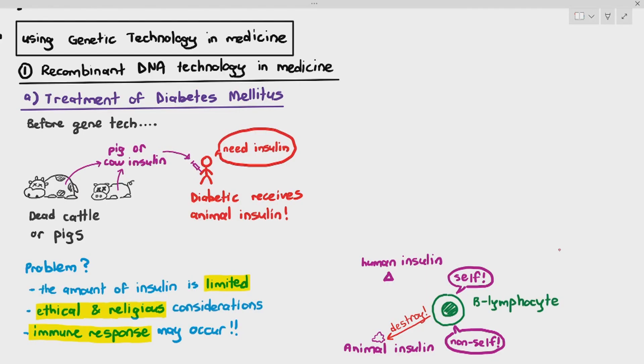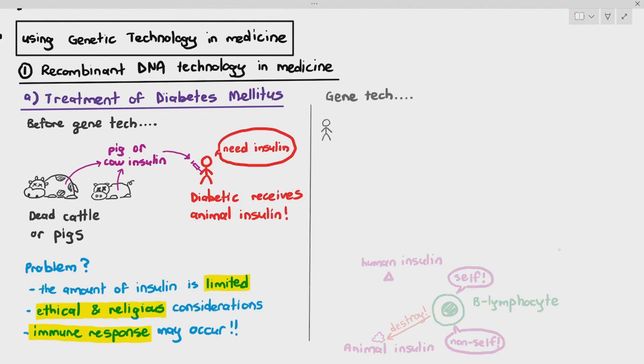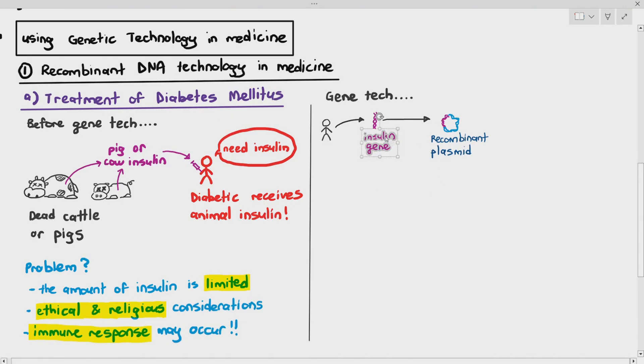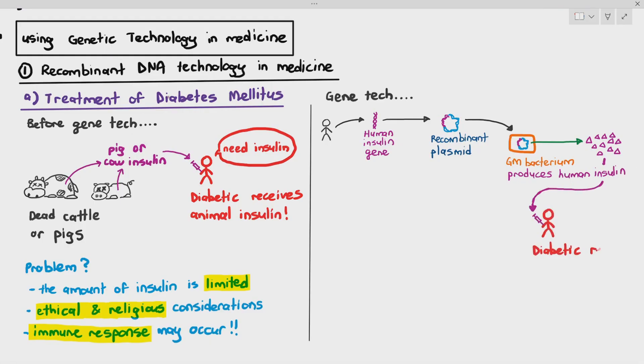So in that case, to solve these particular problems that we are having, we would use gene tech, and in particular, we use recombinant DNA technology. If you remember, in the previous videos, we talked about recombinant DNA technology. We take the insulin gene out of the person, we put it into a plasmid to make it into a recombinant plasmid. We will then put the recombinant plasmid back into the bacterium, and guess what? The bacterium is now able to produce human insulin. So it is a bacteria, but it's producing human insulin for us. So in this case, we can take those insulin and inject those insulin into the person. So the diabetic patient receives human insulin in this case.